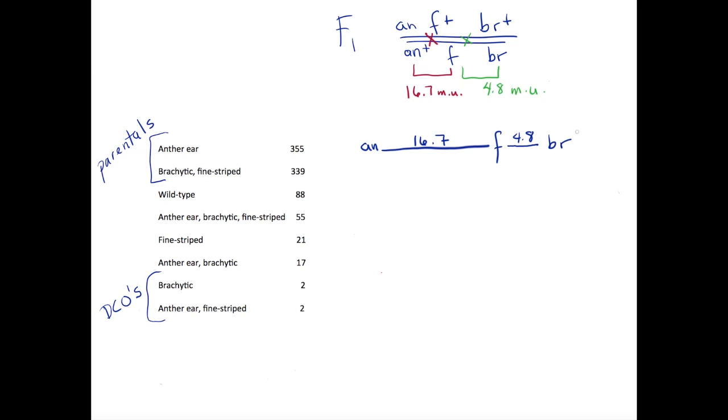Once we have found these two map distances, we can calculate the amount of interference observed. Remember that interference is a measure of the extent to which one crossover prevents the occurrence of another crossover nearby. We know the probability of a crossover in each region of the chromosome, but what is the likelihood that both would occur at the same time? We can multiply the probability of a crossover between AN and F by the probability of a crossover between F and BR, and multiply this by the total number of offspring observed.